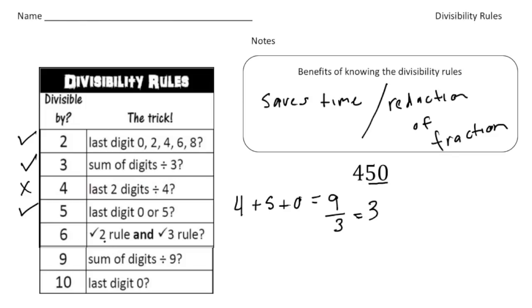The number 6 basically states that if 2 and 3 are both factors of the number, well, so is 6, right? So in this case, we know that 2 is a factor and 3 is a factor. So that means 6 is also a factor.